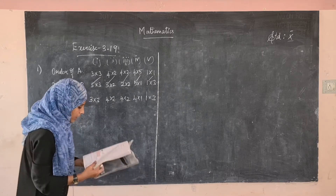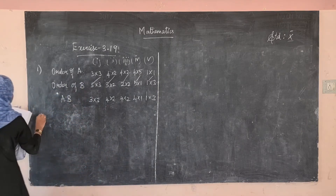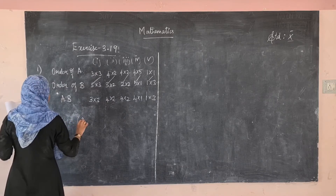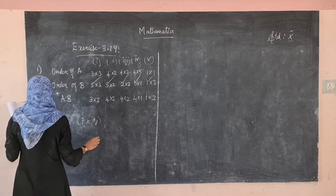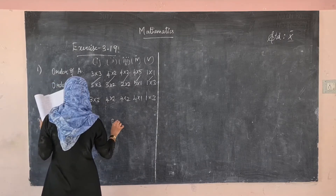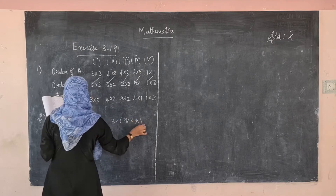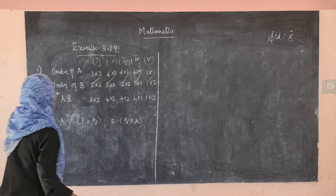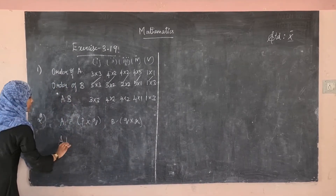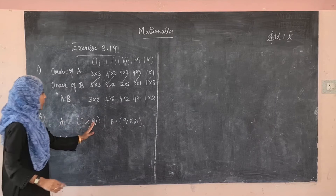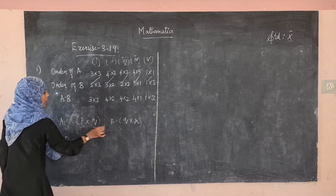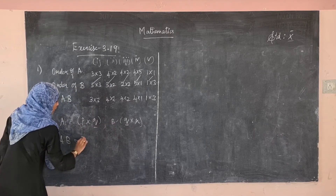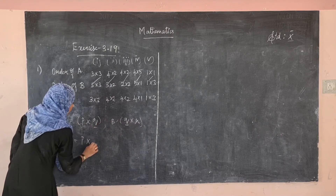In the second question, they have given A's order is P×Q and B's order is Q×R. We have to find the order of AB and BA. For AB: P×Q multiplied by Q×R — these two inner elements are the same, therefore the resulting order is P×R. The first element is P and the last element is R.